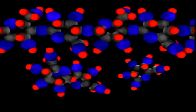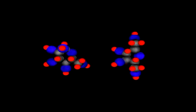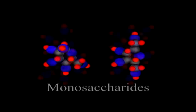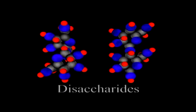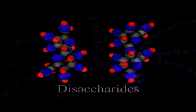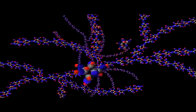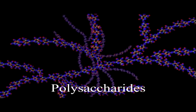Carbohydrates fall into one of three categories depending on the number of sugars they contain. Carbohydrates such as glucose or fructose that consist of a single sugar monomer are called monosaccharides. Sucrose, lactose, and other carbohydrates that contain two sugar monomers are called disaccharides. Starch, glycogen, cellulose, and other carbohydrates made out of long chains of sugars are called polysaccharides.